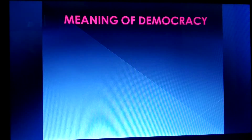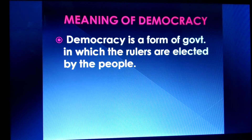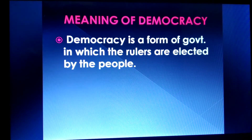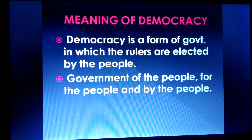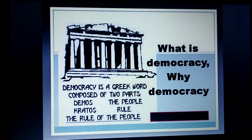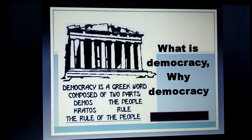We will study the meaning of democracy in detail. Democracy is a form of government in which the rulers are elected by the people — that means after every five years, people have the right to choose their own representatives. It is a government of the people, for the people, and by the people. Democracy is a Greek word composed of two parts: 'Demos' meaning the people, and 'Kratos' meaning the rule — that is, the rule of the people.